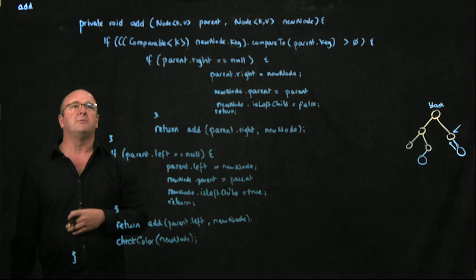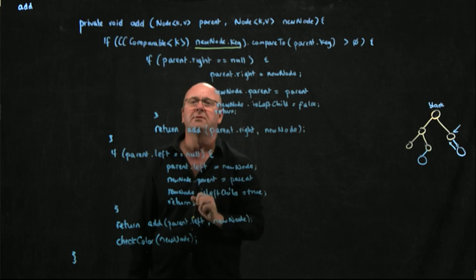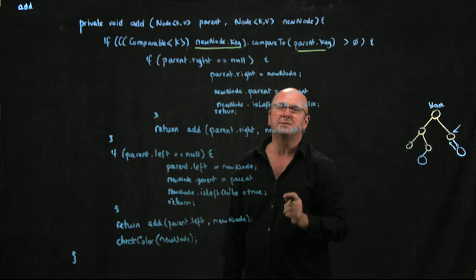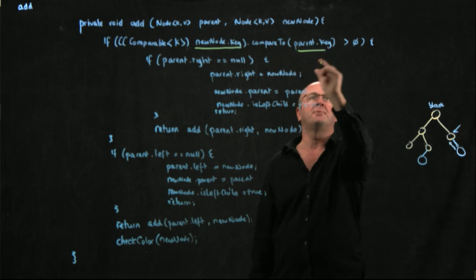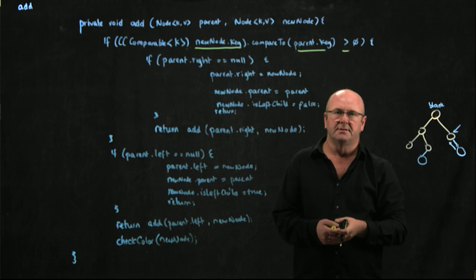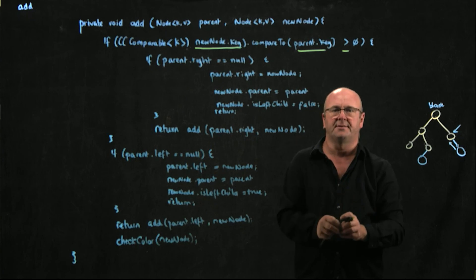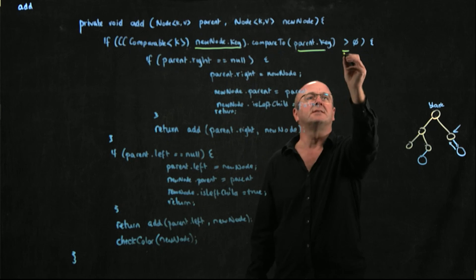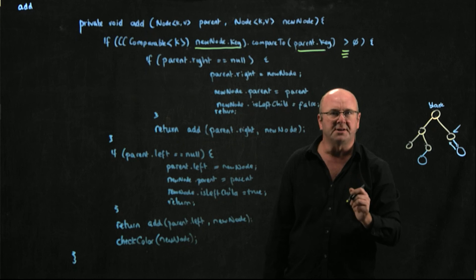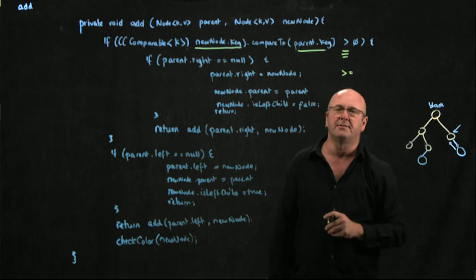Also remember: we've compared newNode to parent, and it's important to make sure that newNode, parent, and the greater-than direction are the right way around. Otherwise your tree will be flipped, and you need to be consistent across all your methods. Also note this is a greater-than check — if you want to handle duplicates, you might change this to greater-than-or-equal-to, depending on how you want duplicates handled.